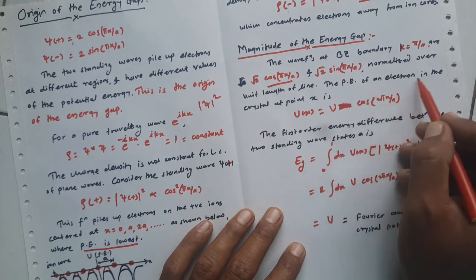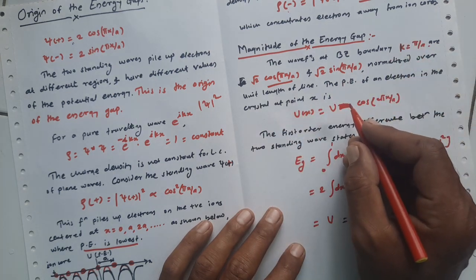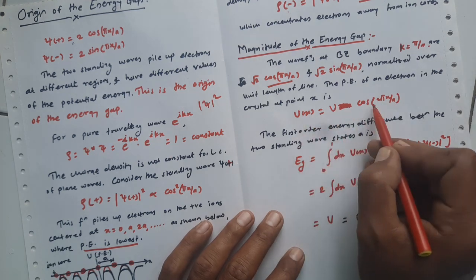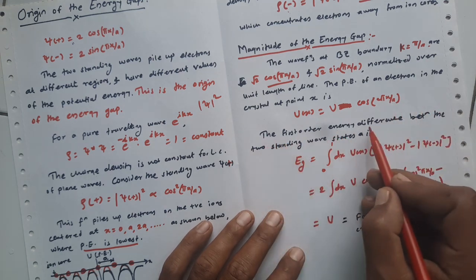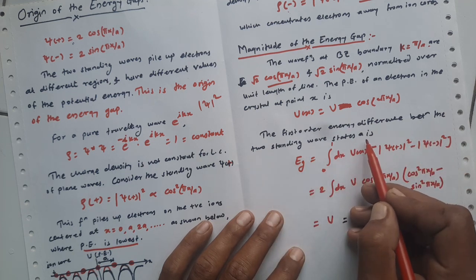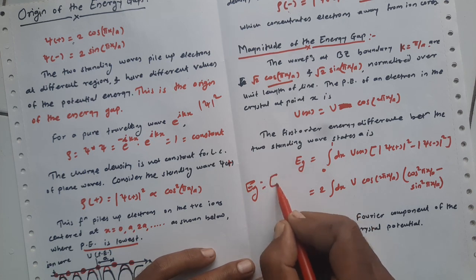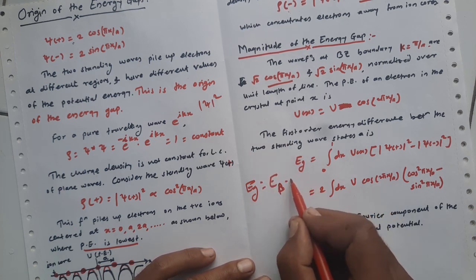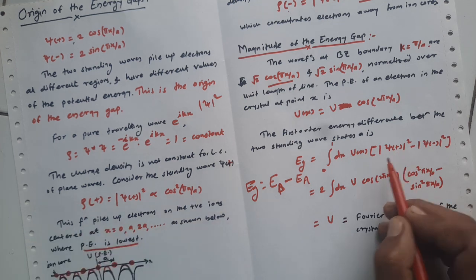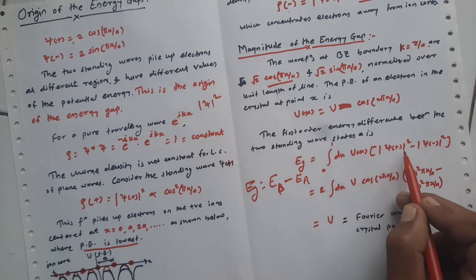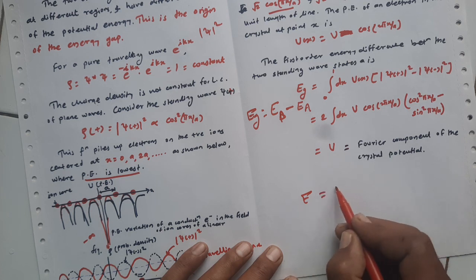The first-order energy difference between the two standing wave states is Eg, where Eg equals the energy at point B minus the energy at point A. The expectation value of energy is found by integrating ψ* H ψ dx over the given space from zero to L in the one-dimensional case. The Hamiltonian here is represented by U·cos(2πx/a), and we substitute the values of U(x) = U·cos(2πx/a).